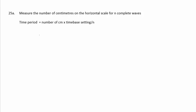In question 25a, we describe how to use the trace on an oscilloscope to find the frequency of a sound wave. We can measure the number of centimeters on the horizontal scale for n complete waves. Then the time period equals the number of centimeters multiplied by the time-base setting, divided by the number of complete waves n. Frequency then is 1 divided by time period.